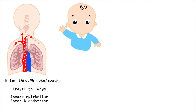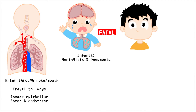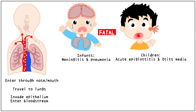Haemophilus affects individuals of different age groups in different ways. In infants under 2 years of age, it causes meningitis and pneumonia which can very often be fatal. In older children, between 2 to 10 years of age, it causes acute epiglottitis and otitis media, which are localised infections caused most often by the non-capsulated strains.